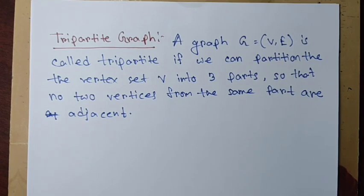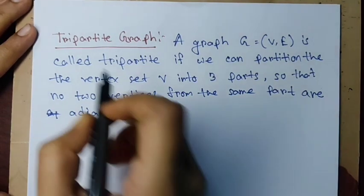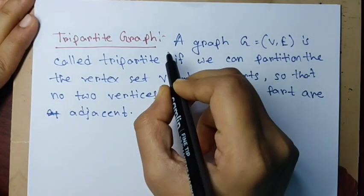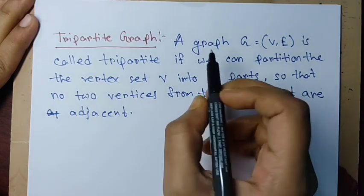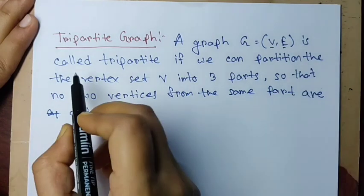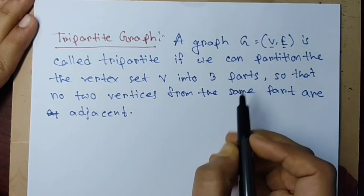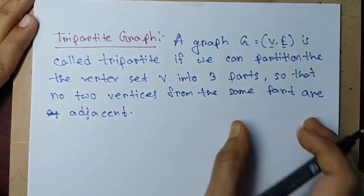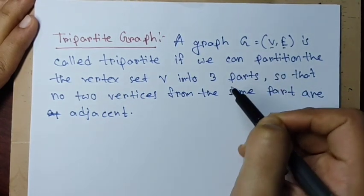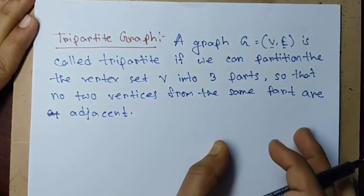For bipartite graphs we divided the vertex set into two parts. For tripartite graphs, as the name suggests, we divide the vertex set into three parts. The definition is: a graph G with vertex set V and edge set E is called tripartite if and only if we can partition the vertex set V into three parts, so that no two vertices from the same part are adjacent.